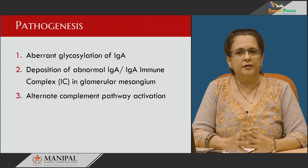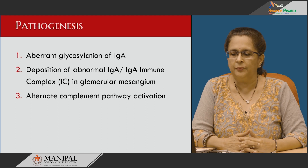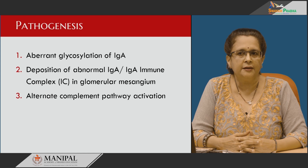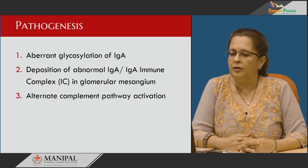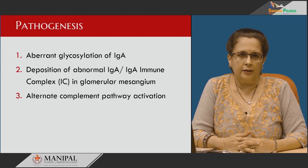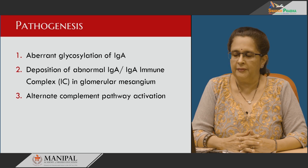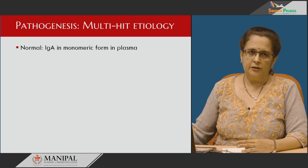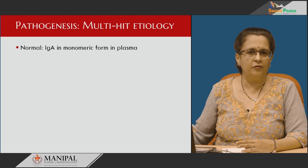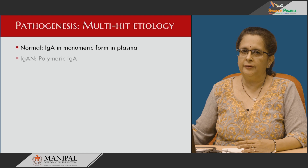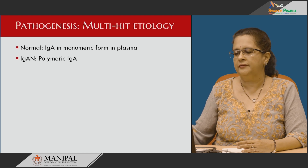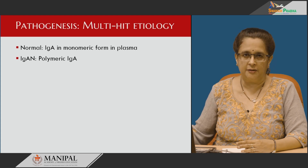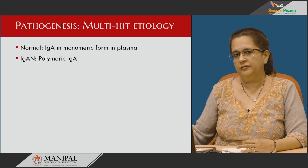The most important pathogenesis behind development of this disease is aberrant glycosylation of IgA deposited in the glomerular mesangium along with its antibody and activation of the alternate complement pathway. It is a multi-hit etiology. Normally, IgA is in monomeric form in plasma and the polymeric forms are catabolized by the liver. In IgA nephropathy, polymeric IgA is seen in the plasma, but this alone does not account for the disease.